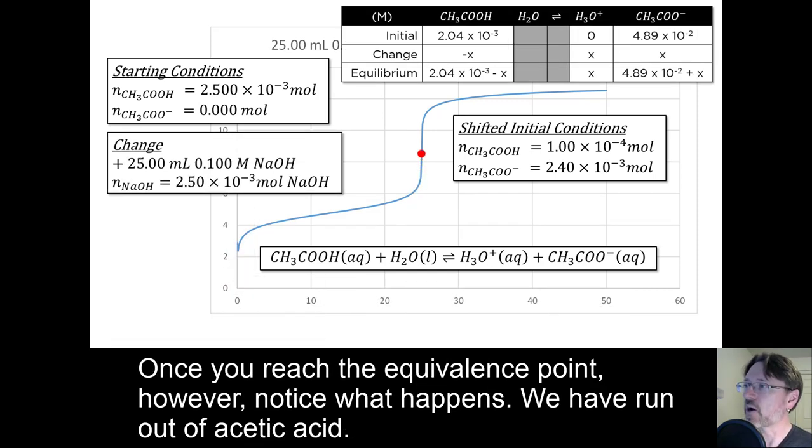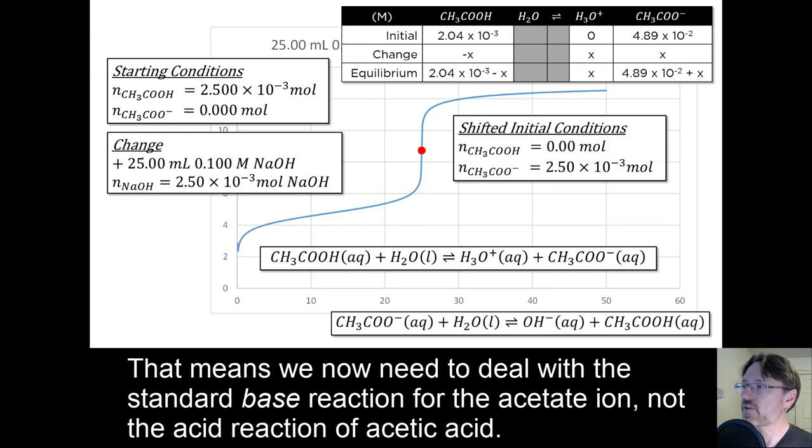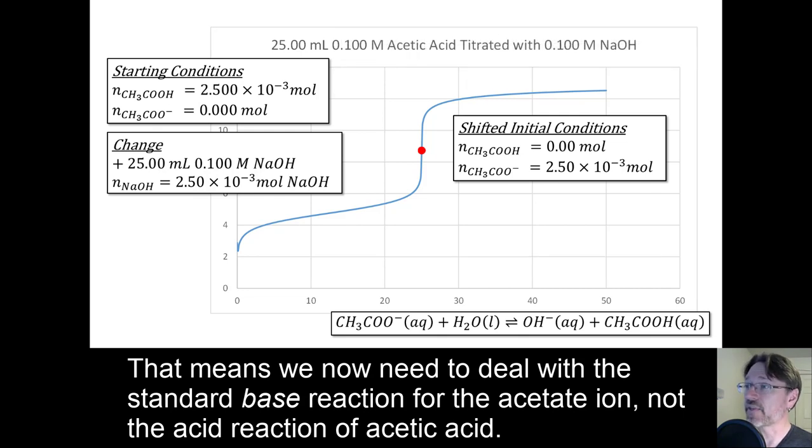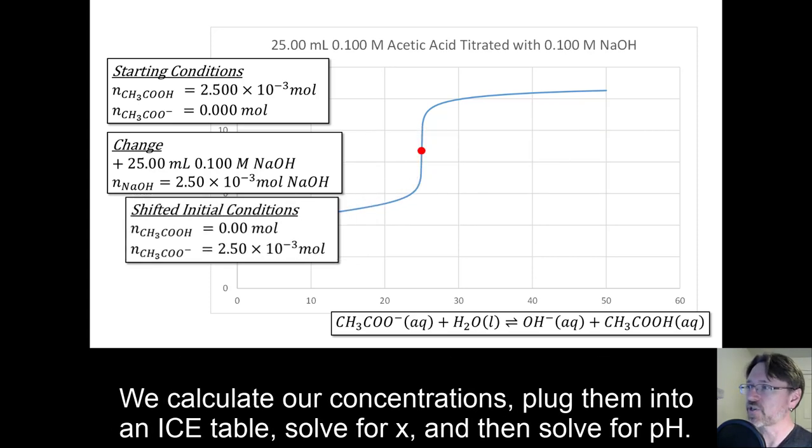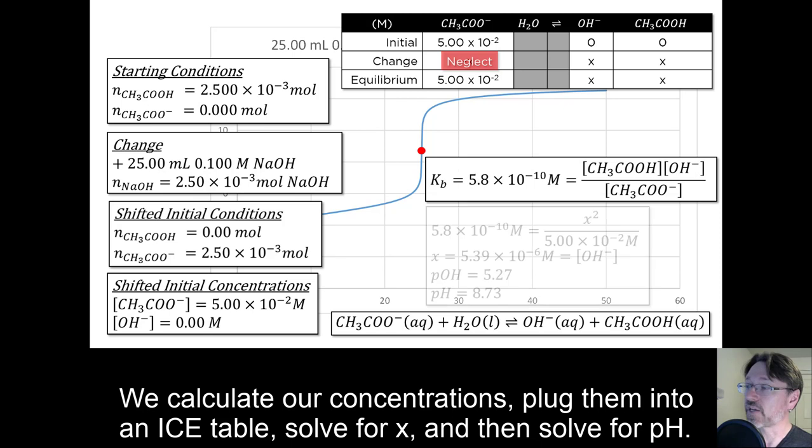Once you reach the equivalence point, however, notice what happens. We've run out of acetic acid. That means we now need to deal with the standard base reaction for the acetate ion, not the acid reaction of acetic acid. We calculate our concentrations, plug them into an ice table, and solve for x, and then solve for the pH.